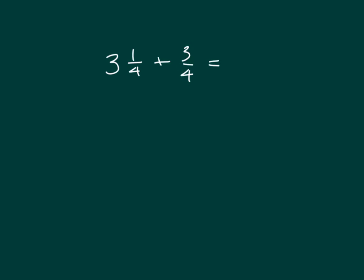Here we have another problem. Remember to add like units. In this case, we do have ones and then we also have fourths. So with our ones, we still have 3 ones there. And then with our fourths, we have 1 fourth and 3 fourths, which would equal 4 fourths.